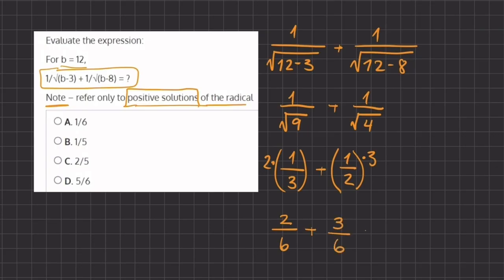Alright, so now that we have a common denominator, we can add these two fractions together, and we have 2 plus 3, which gives us 5, divided by 6.